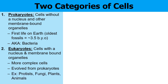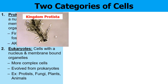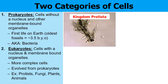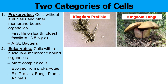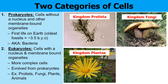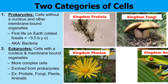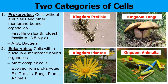These are the other four big kingdoms of life on Earth: members of kingdom Protista, like this amoeba; members of kingdom Fungi, like these mushrooms; members of kingdom Plantae, like this flower; and members of kingdom Animalia, like this frog.